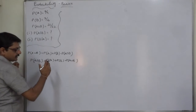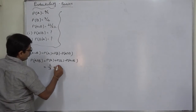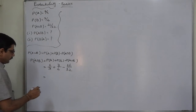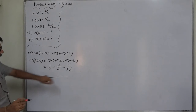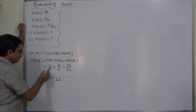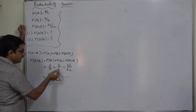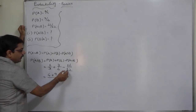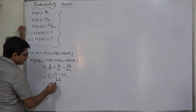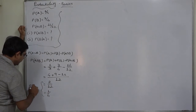We have all three probabilities for the right-hand side: P(A) = 1/3, plus P(B) = 3/4, minus P(A∪B) = 11/12. The LCM of 3, 4, and 12 is 12 itself. So: (4×1) + (3×3) − (1×11) all over 12, giving 4 + 9 − 11 = 2/12, or 1/6. This is P(A∩B).